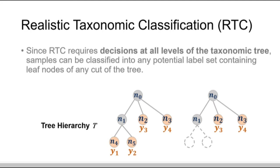Since RTC requires decisions at all levels of the taxonomy tree, samples can be classified into any potential label set containing leaf nodes of any cut of the tree. For example, the potential label set can be Y1, Y2, Y3, Y4, or N1, Y3, Y4.